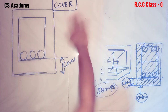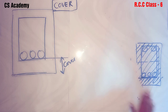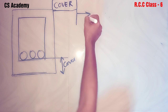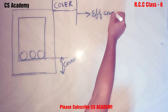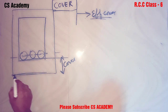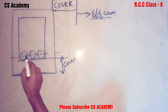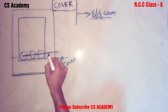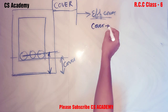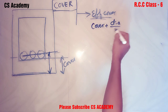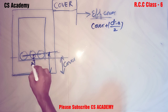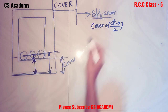We classify cover into two types. The first one is effective cover. Effective cover is the distance from the outer surface of the concrete to the center of the rod. So effective cover = cover + diameter of the rod divided by 2, which is cover plus the radius of the rod.